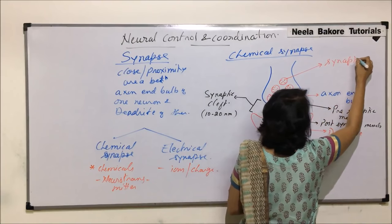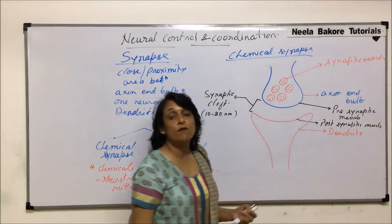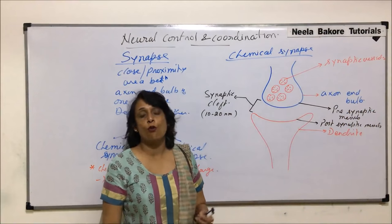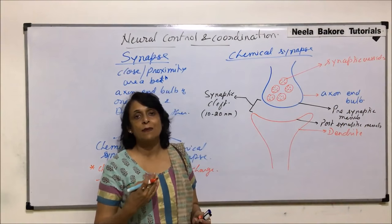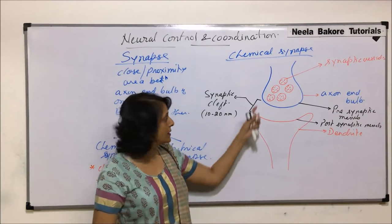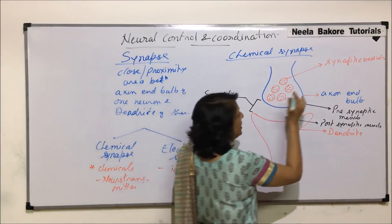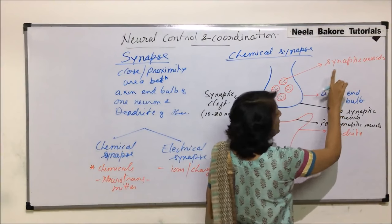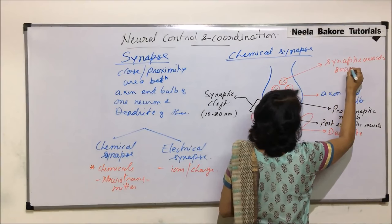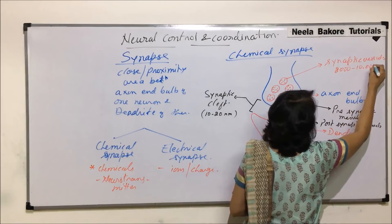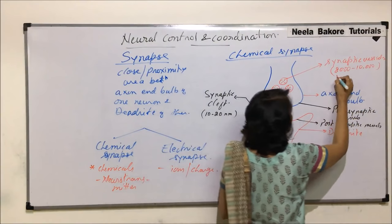Inside the axon end bulb are vesicles — circular structures filled with neurotransmitters. These are known as synaptic vesicles. The neurotransmitter can be acetylcholine or adrenaline depending upon the type of neurons. Normally, one synaptic vesicle contains about 2,000 to 10,000 molecules of neurotransmitter.